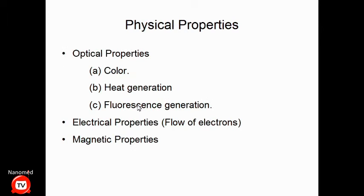The first principle I'd like to discuss is the physical properties of materials. This usually involves three specific properties: optical properties — the color, the heat produced, or the fluorescence emission when electrons are excited from a ground state to an excited state and return; electrical properties — the flow of electrons from one point to the next; and magnetic properties. All three are related to the size, shape, and surface chemistry of the nano object.